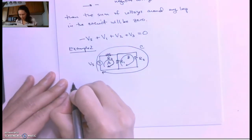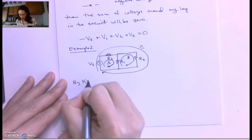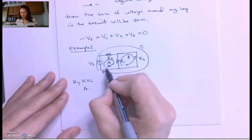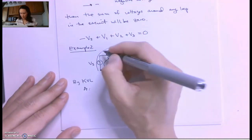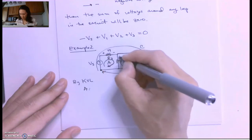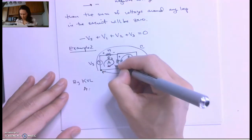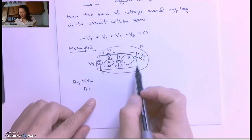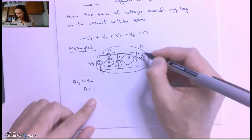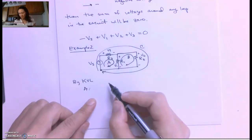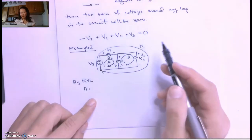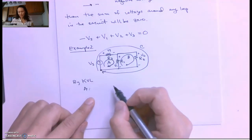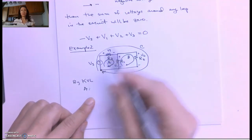So by KVL, we know that at loop A, if we start here, assuming these voltage drops, I should probably label these: plus minus V1, plus minus V2. If I have the signs indicated on my voltage drops, then I'll be able to use the passive sign convention to make sure that I'm correctly adding or subtracting the voltages as I go around the loop.